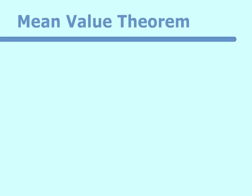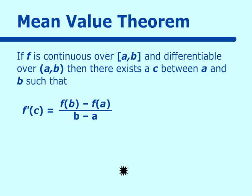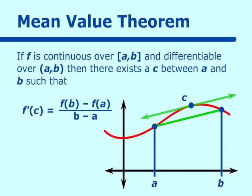Let's go on to another theorem: the mean value theorem. If f is continuous over closed [A, B] and differentiable over open (A, B), then there exists a c between A and B such that f prime at C equals f of B minus f of A over B minus A. Graphically, if we draw a secant line connecting points A and B on the curve, this theorem tells us there is some point C on the curve where the slope of the tangent line equals the slope of that secant line.